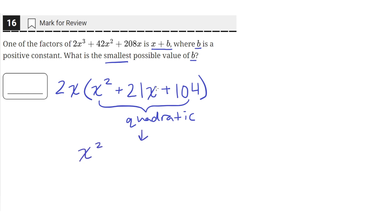So we need to split this middle term into two terms whose coefficients, when multiplied together, will equal 104. So those two numbers are 8 and 13.